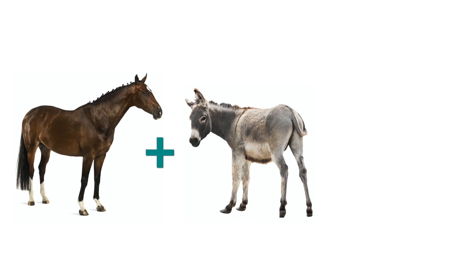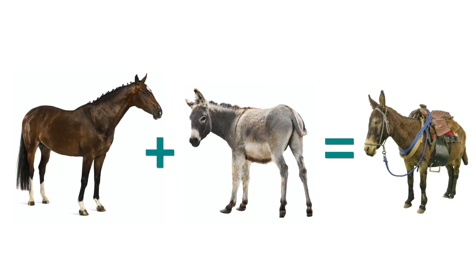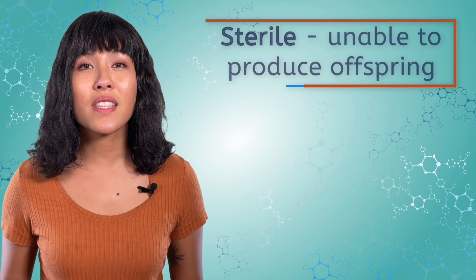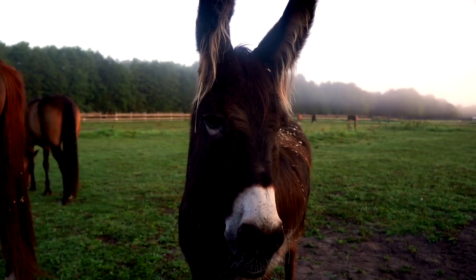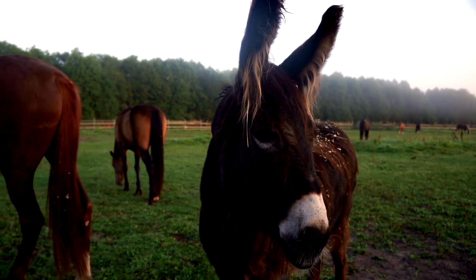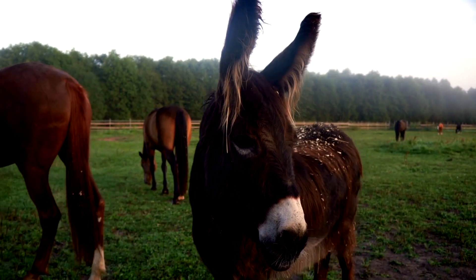But what if a horse were to have a baby with a donkey? It might seem odd, but it actually works. Their offspring is called a mule. But donkeys and horses are not the same species because their offspring, mules, can't have their own offspring. This means they are sterile.